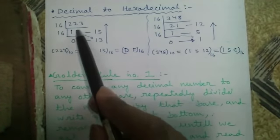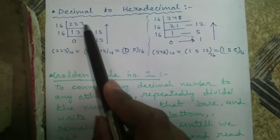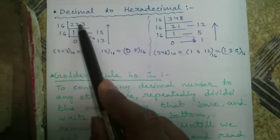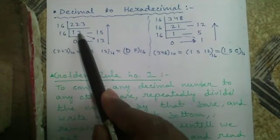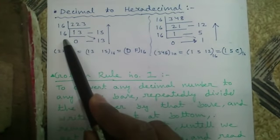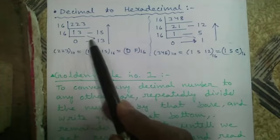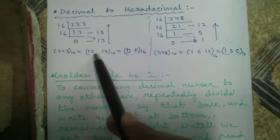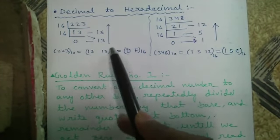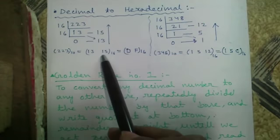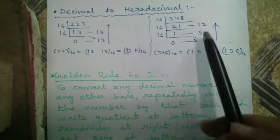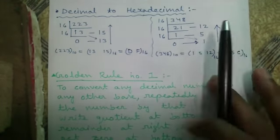Decimal to hexadecimal conversion: source number 223, destination base 16. So 223 ÷ 16 = quotient 13, remainder 15; 13 ÷ 16 = quotient 0, remainder 13. Reading upward it becomes 13 and 15, but we know 13 is written as D and 15 as F in hexadecimal. So it becomes DF in hexadecimal. Try dividing yourself.